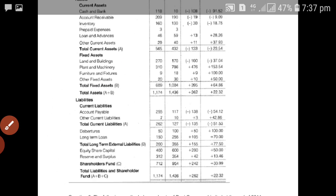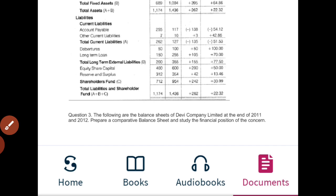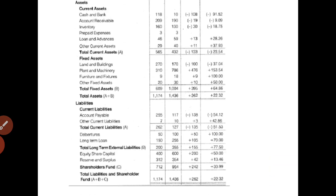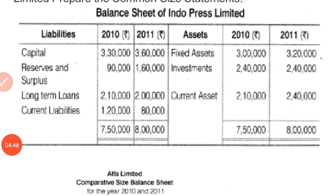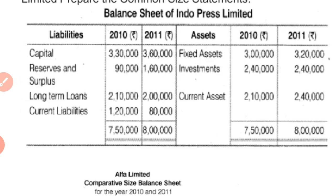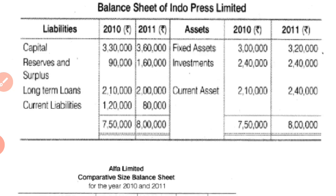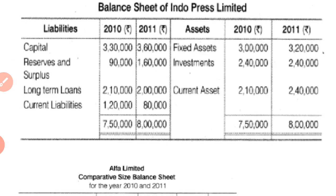This is how we prepare a comparative balance sheet. A comparative income statement is also prepared just like this. Now I am giving you a new balance sheet and you are required to prepare a comparative balance sheet. On the asset side there are current assets, and on the liability side there are items to be discussed.